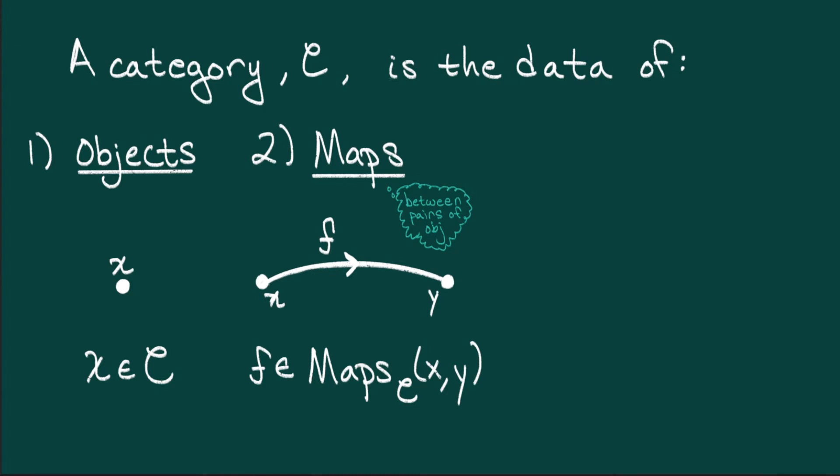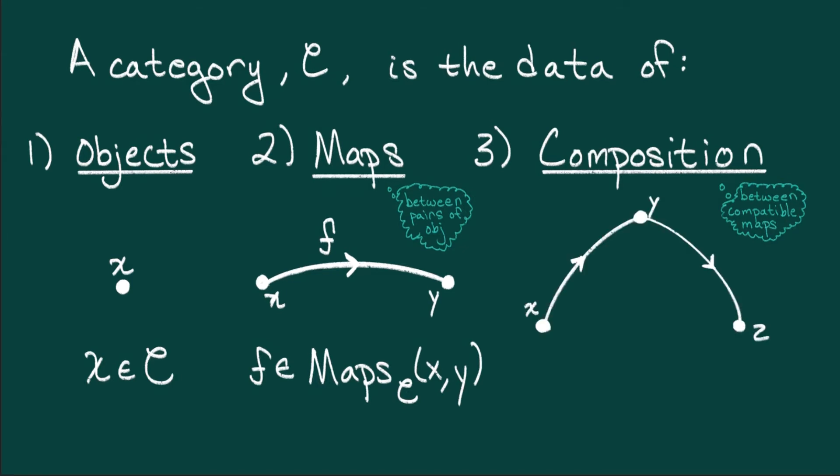The third piece of data is novel to categories. It consists of a procedure for composing compatible, ordered pairs of maps, thus obtaining a new map. Here, compatible means that the target of the first map, f, is the source of the second map, g.